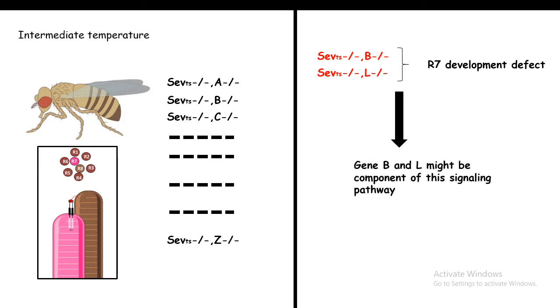Ultimately, these genes that we exemplified as B or L turned out to be GRB2 and SOS. This is how GRB2 and SOS were discovered.